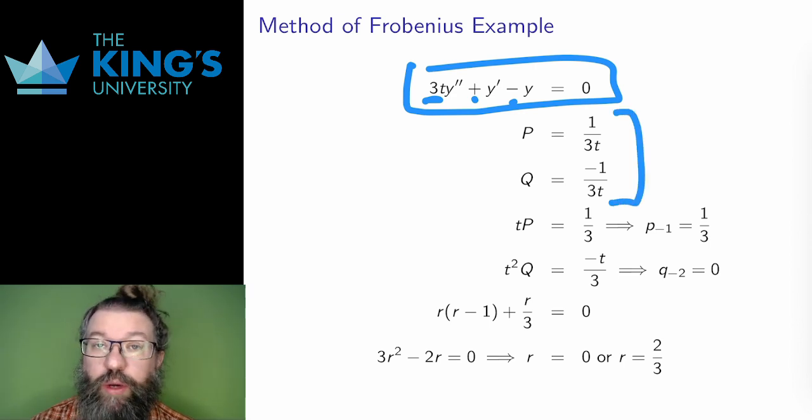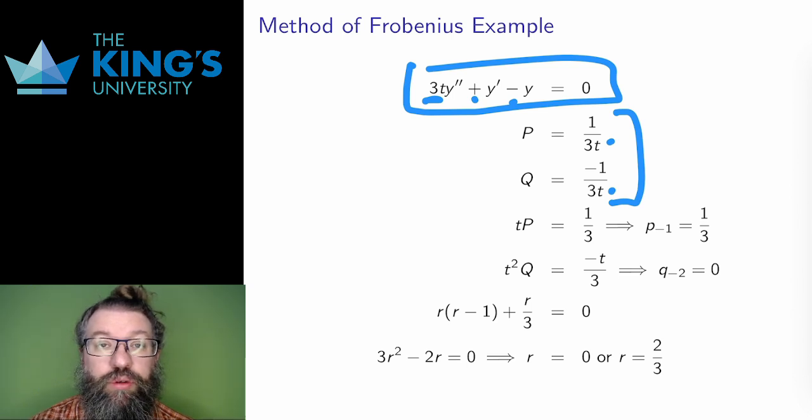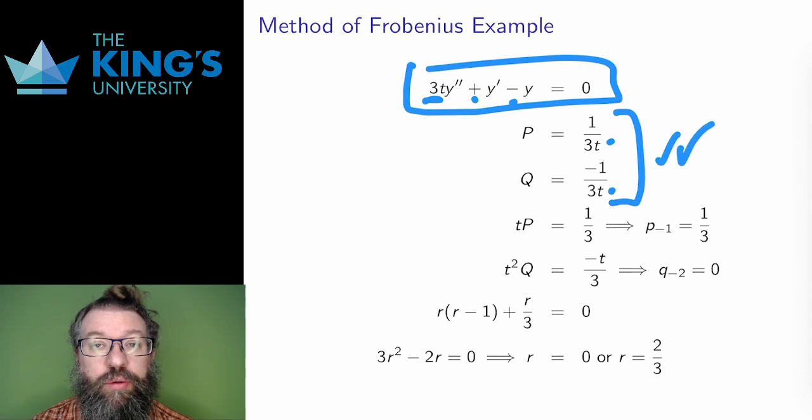Is this a regular singular point? Well, each of p and q have a pole of order 1 at t equals 0. To be a regular singular point, p can have a pole of order 1 and q can have a pole of order 2. So this is fine. These poles are within the tolerance for a regular singular point. So the method of Frobenius does apply here.